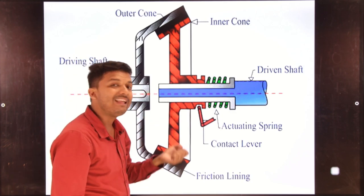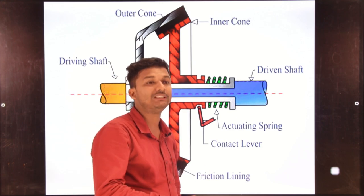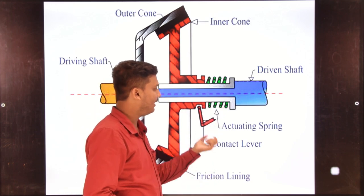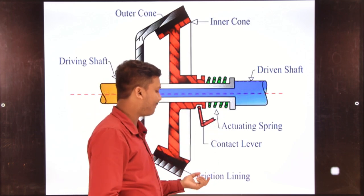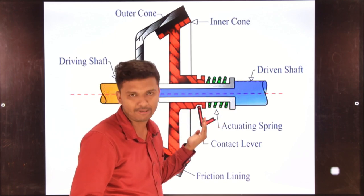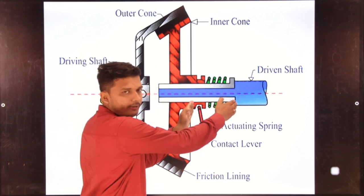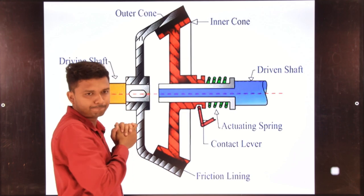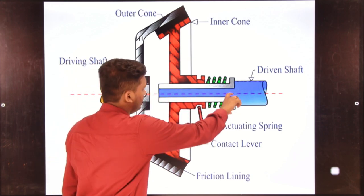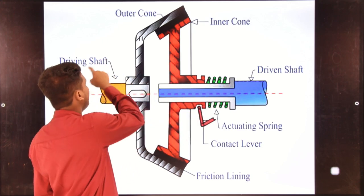This is known as disengagement. In engagement, when the driver releases the clutch pedal, the spring or contact lever returns it to the original position. In engagement, the inner cone moves towards the outer cone.